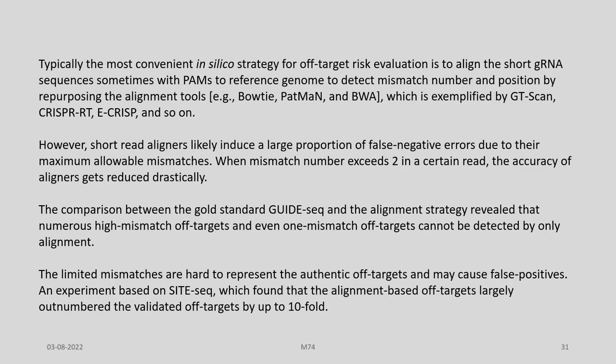Typically, the most convenient in silico strategy for off-target risk evaluation is to align the short gRNA sequence, sometimes with PAMs, to the reference genome to detect mismatch number and position by repurposing alignment tools. However, short-read aligners likely induce a large proportion of false negative errors due to their minimum allowable mismatches. When the mismatch number exceeds 2 in a certain read, the accuracy of aligners is drastically reduced. The comparison between the gold standard guide-seq and the alignment strategy revealed that numerous high-mismatch off-targets and even one-mismatch off-targets cannot be detected by alignment alone.